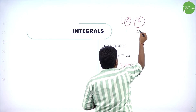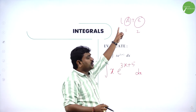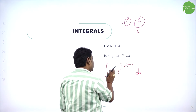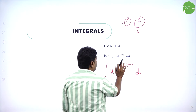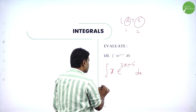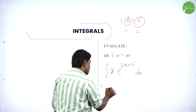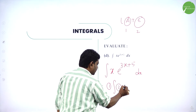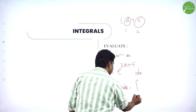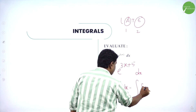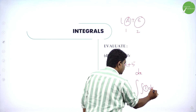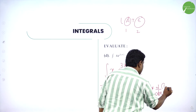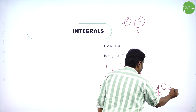First function is x (algebra), second function is e^(3x+5) (exponential) — it is in order. Apply parts: first function into integration of second function, minus integration of integration of second function into derivative of first function with respect to x.